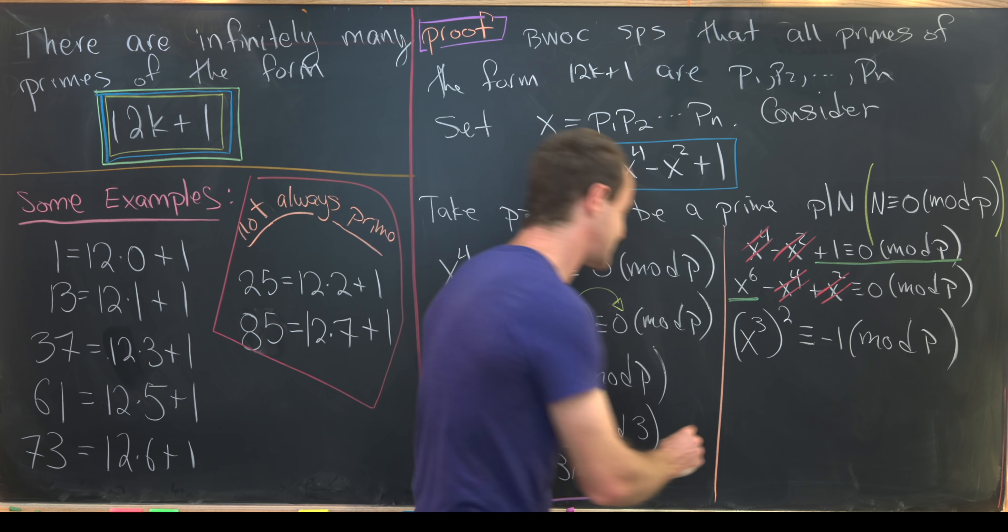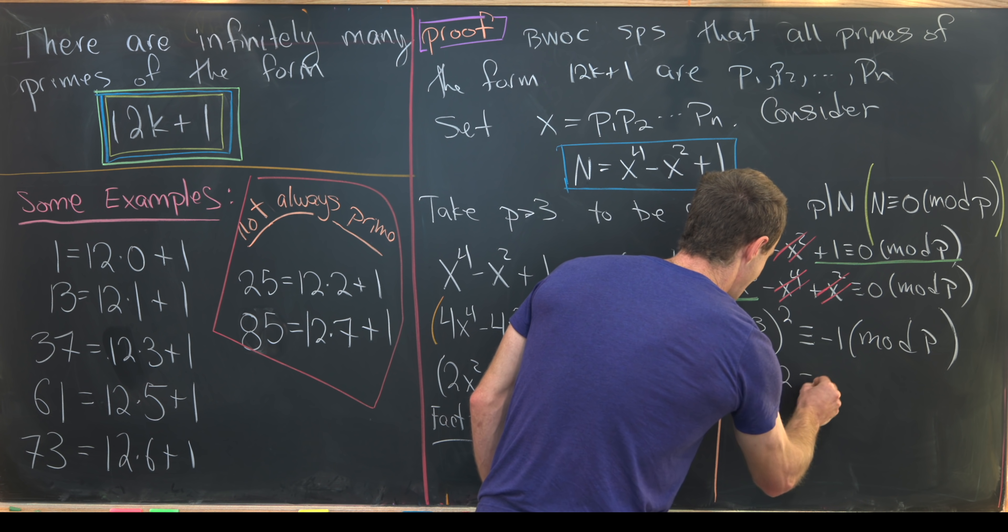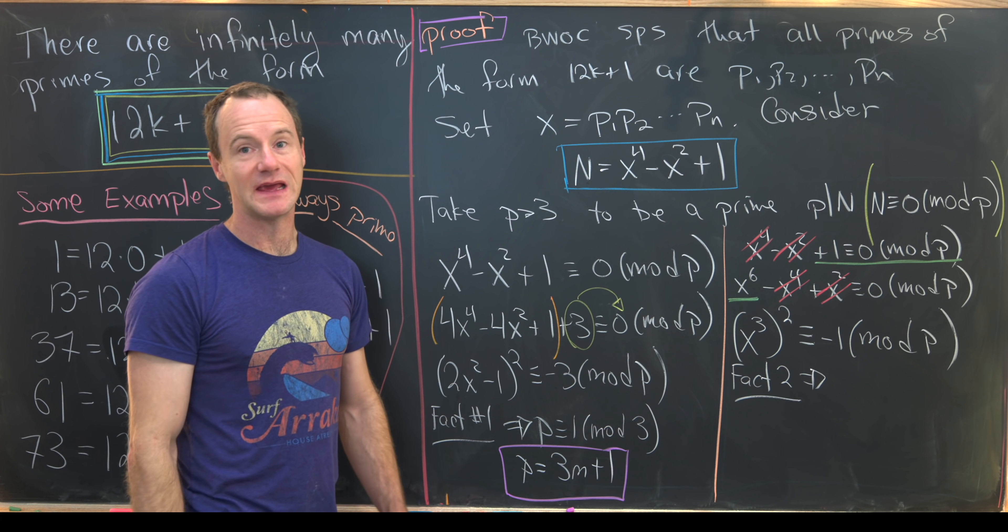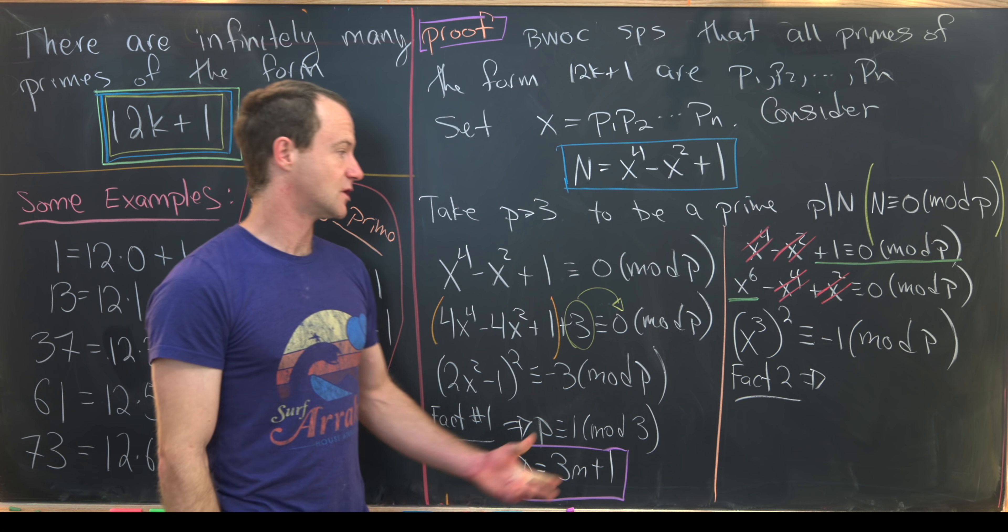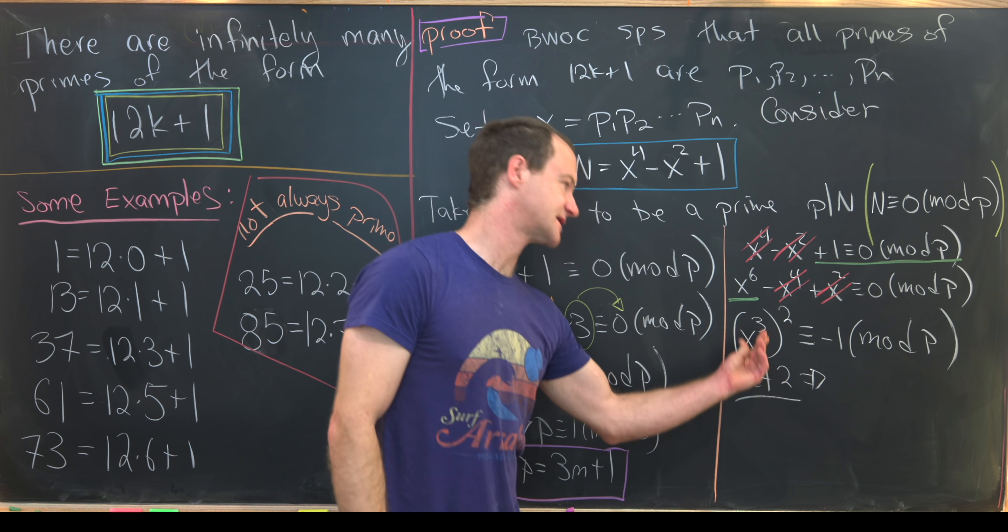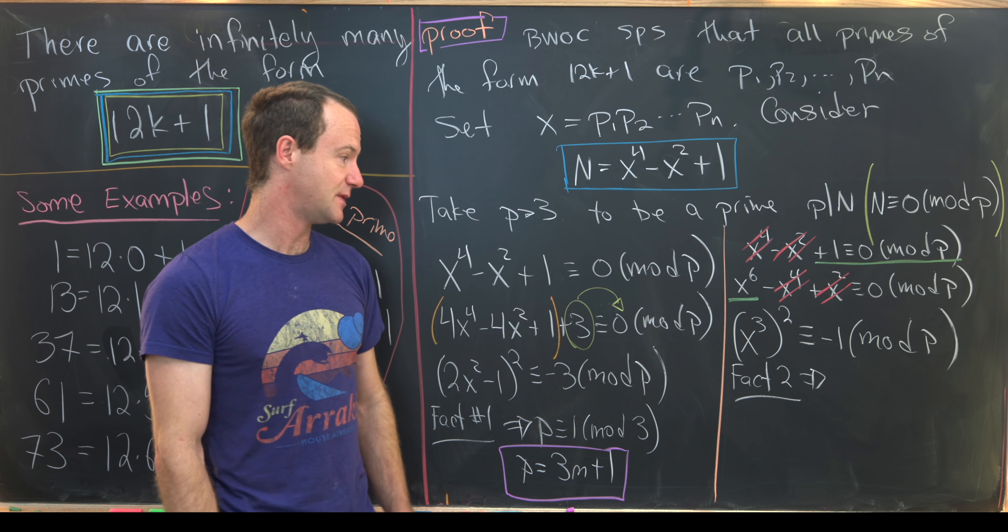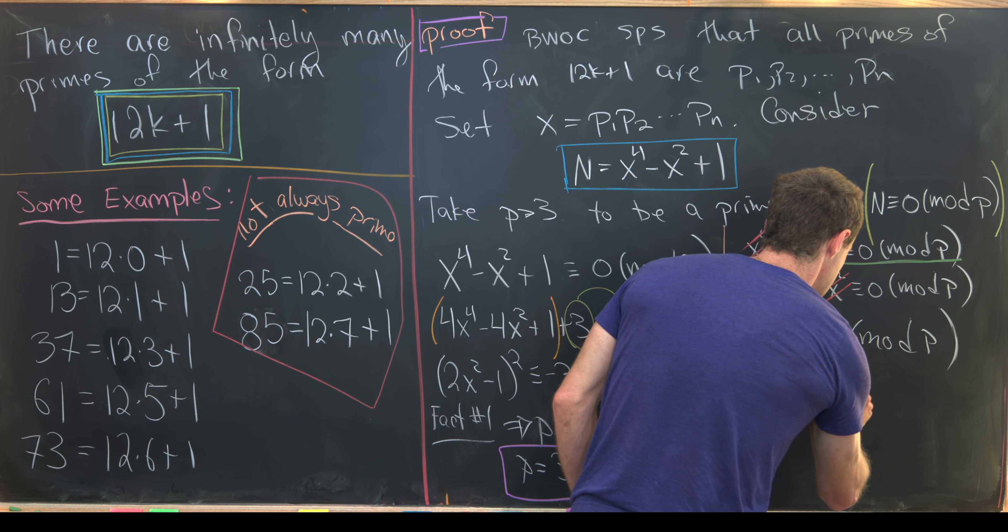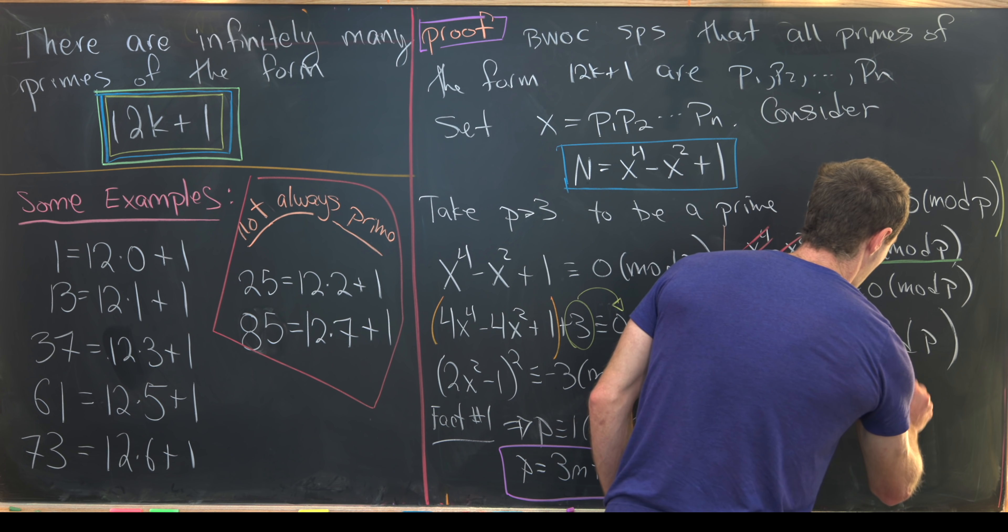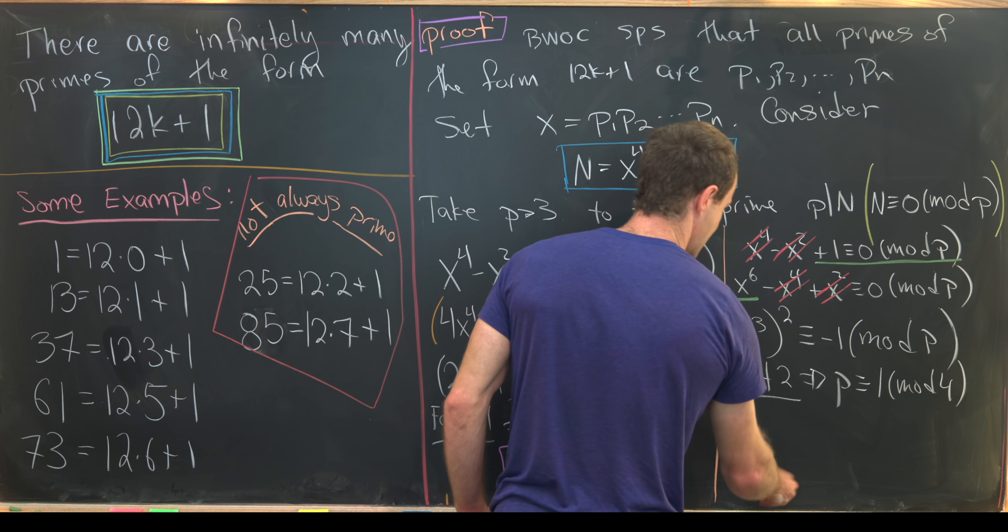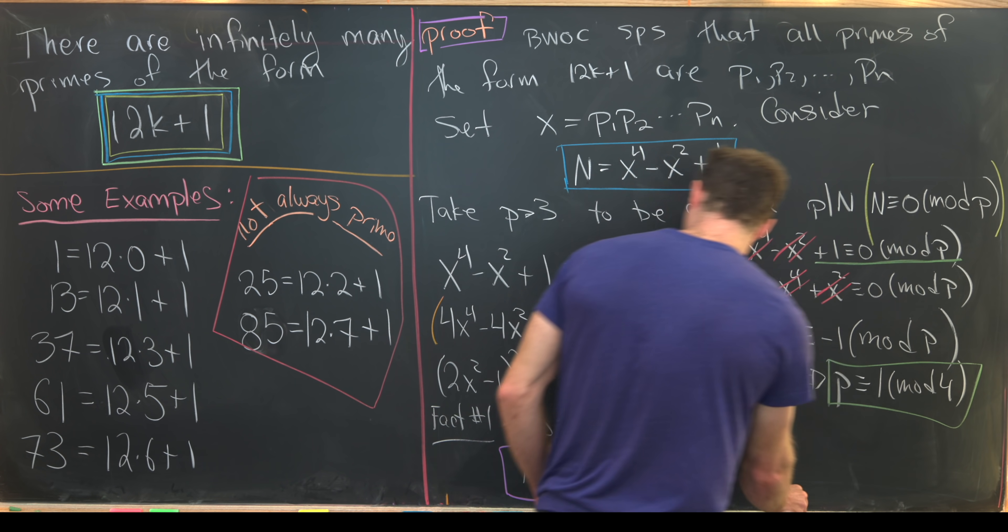But by fact 2, that tells us exactly what form p is. So it doesn't really matter that this is x cubed squared. All that matters is that we're squaring something and getting minus 1 mod p. That tells us that p is congruent to 1 modulo 4. So let's maybe put a green box around that.